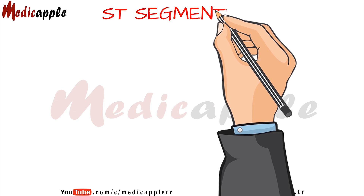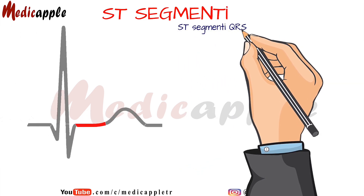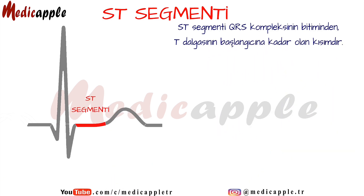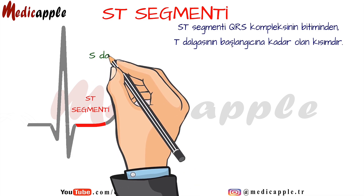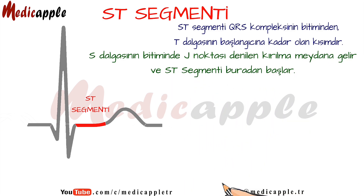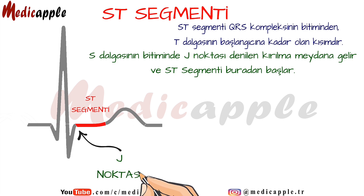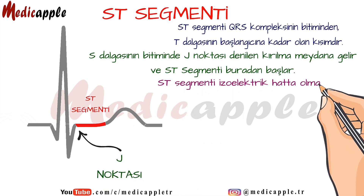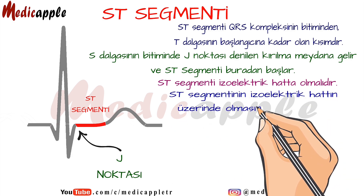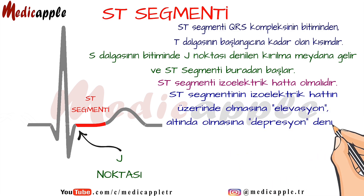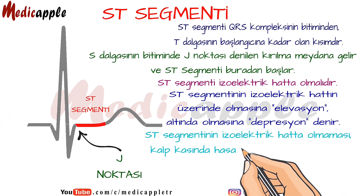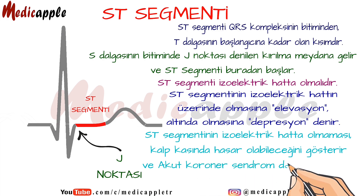ST segment. The ST segment is the part from the end of the QRS complex to the beginning of the T wave. At the end of the S wave, a break called the J point occurs and the ST segment starts from here. The ST segment should be on the isoelectric line. The ST segment being above the isoelectric line is called elevation, and being below it is called depression. The absence of the ST segment at the isoelectric line indicates possible damage to the heart muscle and requires evaluation for acute coronary syndrome.